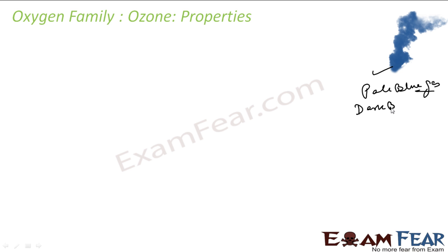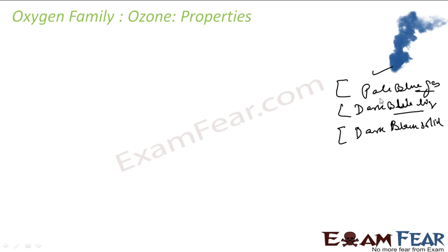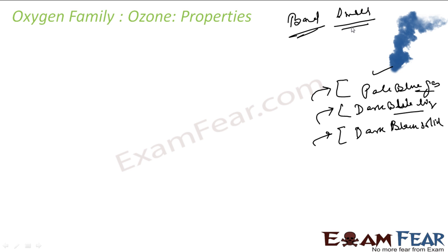In liquid form, ozone is a very dark blue liquid. At even lower temperature and higher pressure it becomes a dark black solid. At STP it is a gas; at lower temperature it is liquid, and at even lower temperature we can solidify it — the color changes accordingly. It has a very characteristic bad smell, which is why the word ozone came from the Greek word meaning smell. It smells like chlorine.